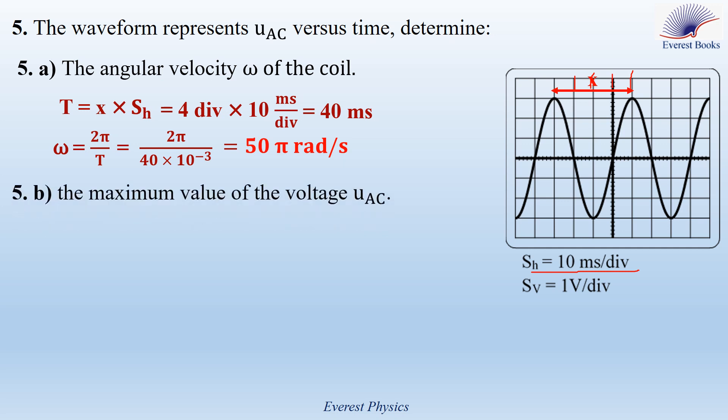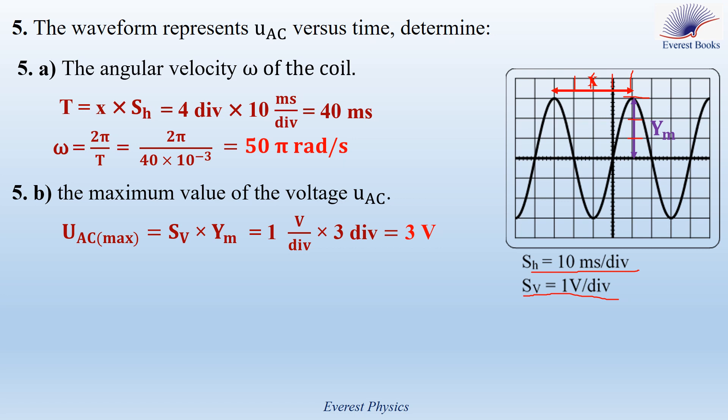Five B: determine the maximum value of the voltage Uac. The maximum value is given by Sv times Ym, where Sv is the vertical sensitivity or amplitude gain, equal to one volt per division, and Ym represents the vertical divisions for a positive or negative peak relative to the time axis. From the figure, Ym equals three divisions. Substituting Ym by three divisions and Sv by one volt per division, the maximum value of Uac is equal to three volts.